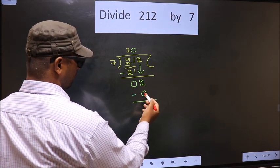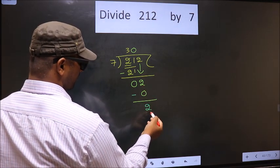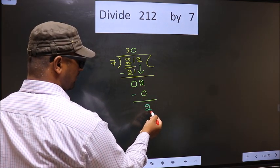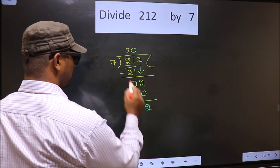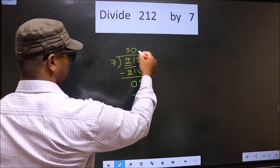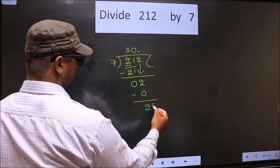Now you subtract. 2 minus 0 is 2. We did not bring any number down here. And 2 is smaller than 7, so now you can put a dot and take 0 here.